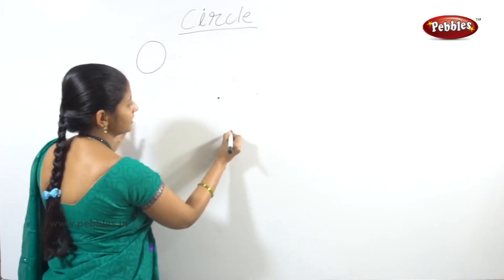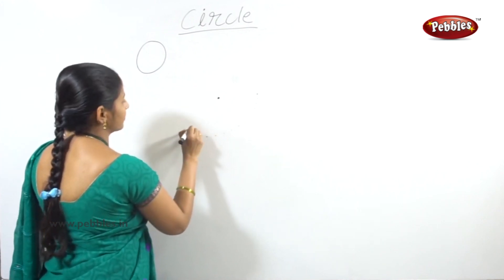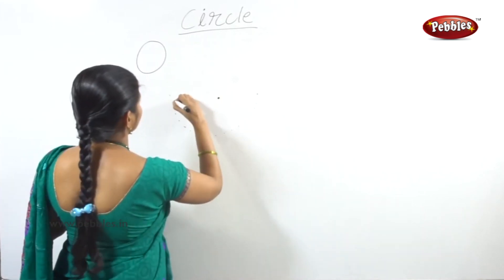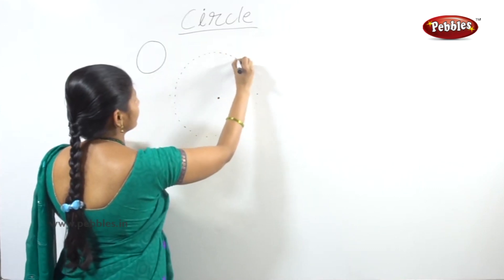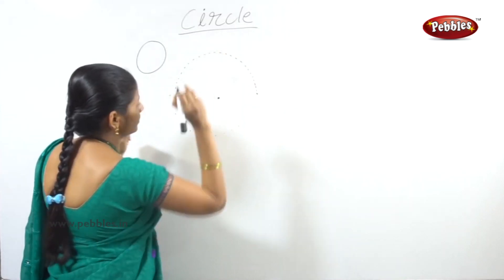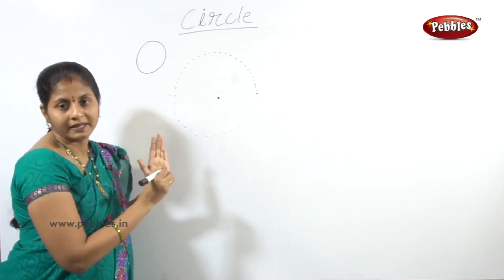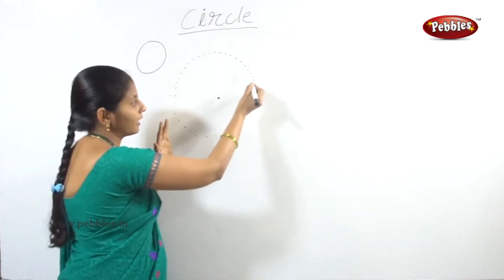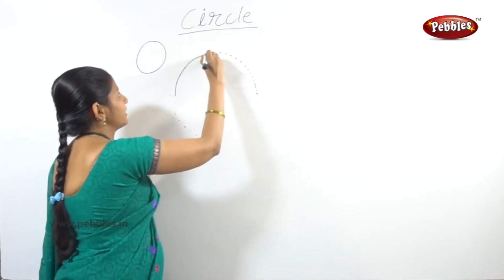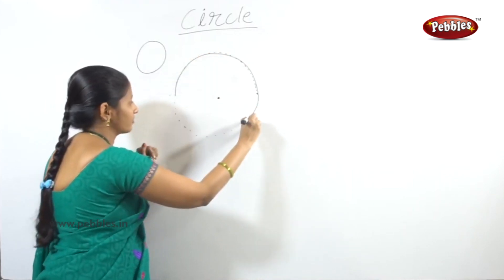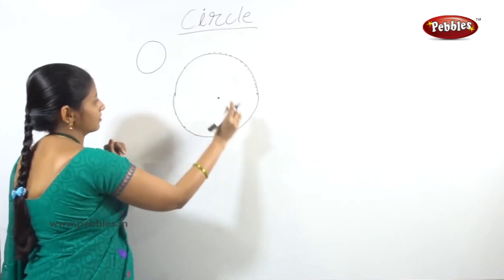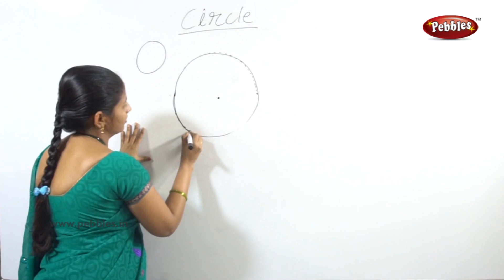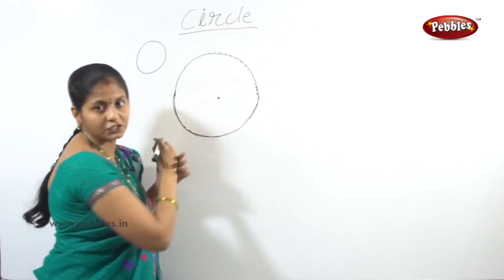That is the fixed point. I will arrange the string at a centimeter distance and draw the shape. Now we have a circle shape.